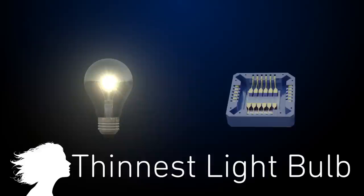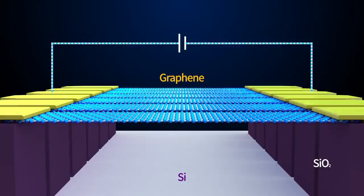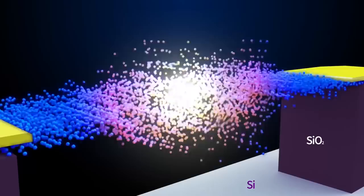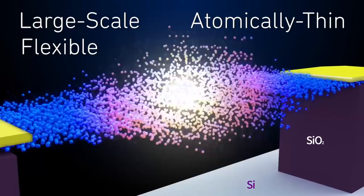Researchers from Columbia University have created the world's thinnest light bulb. By using a graphene coating that can withstand temperatures as high as 2500 degrees Celsius, they're able to build a filament that's atomically thin but able to generate visible light. They hope to build circuits that use photons instead of electrons to pave the way for large-scale, flexible, atomically thin, transparent light emitters.